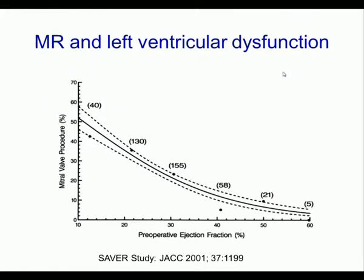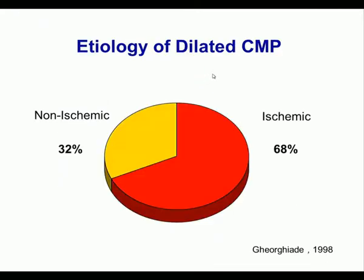Functional mitral regurgitation is particularly prevalent in patients with dilated cardiomyopathy. There is an inverse relationship between the ejection fraction and the prevalence of mitral regurgitation, essentially confirming that functional MR is a disease of cardiomyopathy. The etiology reflects the etiology of dilated cardiomyopathy — for the majority of patients it is ischemic in origin, while non-idiopathic cardiomyopathy is present in only one-third of patients.